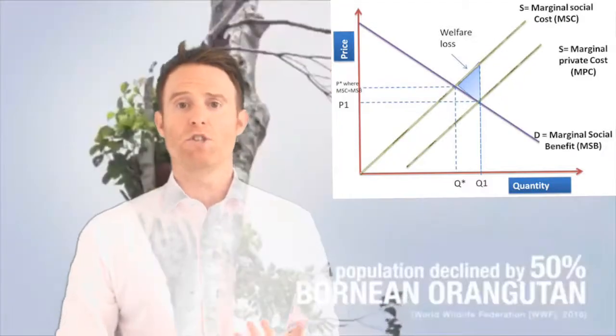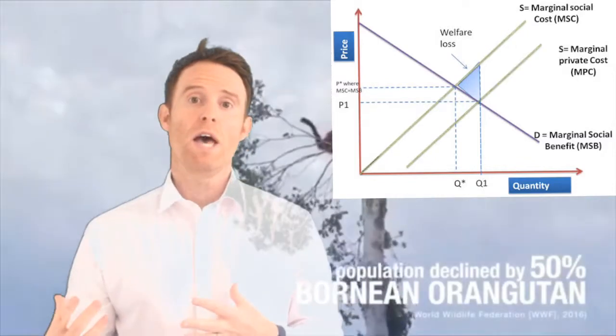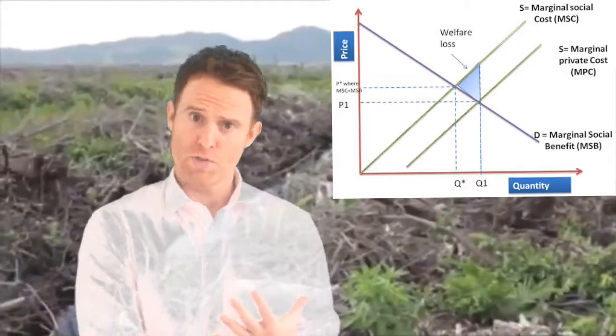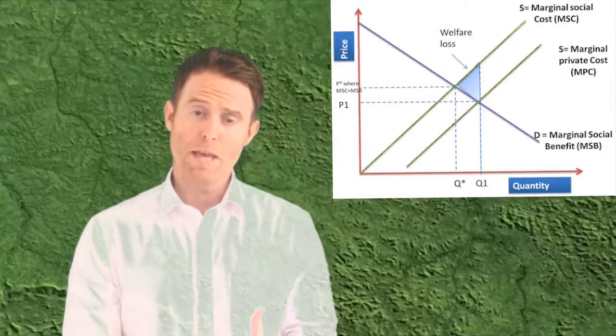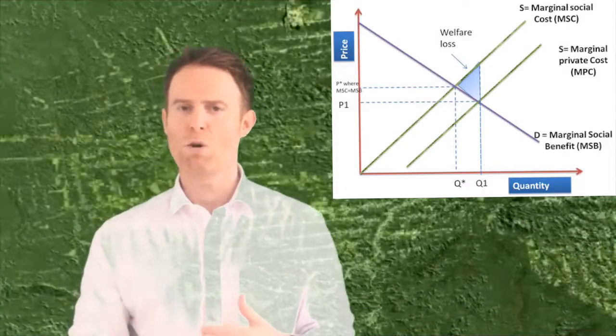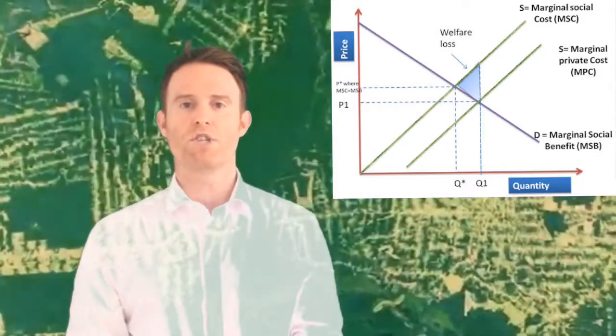So when we're looking at the private transaction, just imagine thinking about Doritos buying their supplies from the supplier. Obviously, the cost of extraction of that palm oil as well. But the marginal social cost, we're looking at all the damage that it's causing and how it's impacting people who are not even involved in that transaction.